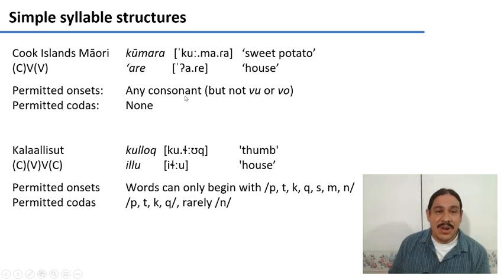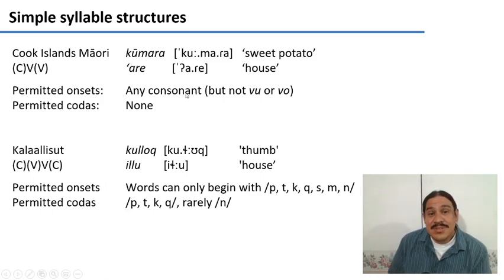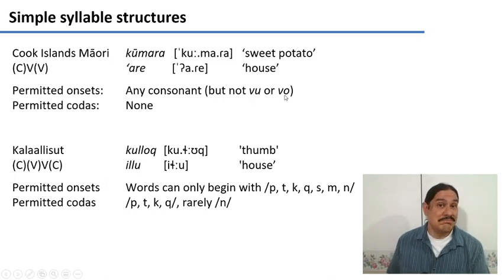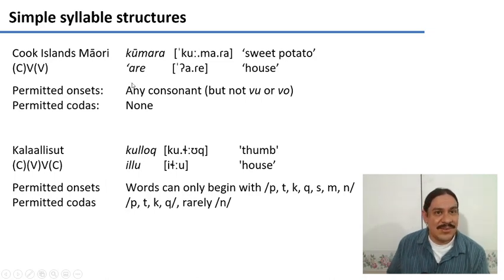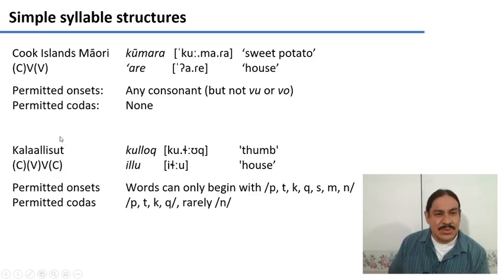As for the onsets, you can have any consonant really, but the language does not permit the combinations vu or vo — there are no words attested with those in the language. So as you can see, Cook Islands Māori has a very simple phonotactics, very similar to Hawaiian, for example.